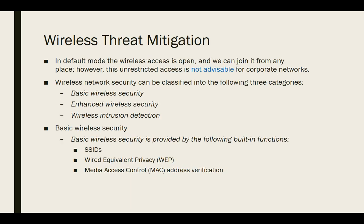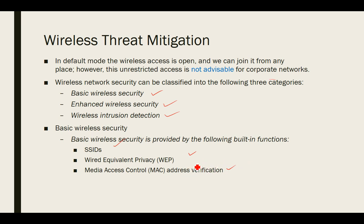The next topic is wireless threat mitigation. By default, wireless access is open and can be joined from anywhere, which is not advisable for corporate networks. Wireless network security can be classified into three categories: basic wireless security, enhanced wireless security, and wireless intrusion detection systems. Basic wireless security is provided by SSID, Wireless Equivalent Privacy (WEP), and MAC address verification. These topics will be discussed in the next class. That is all for today. Thank you.